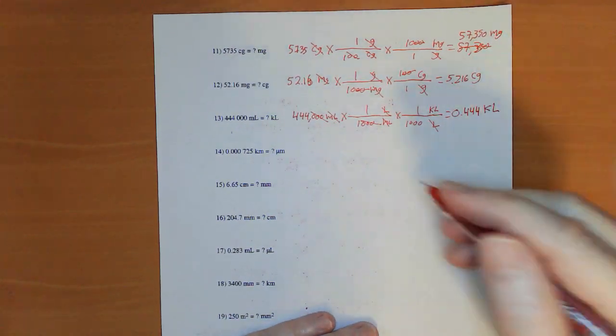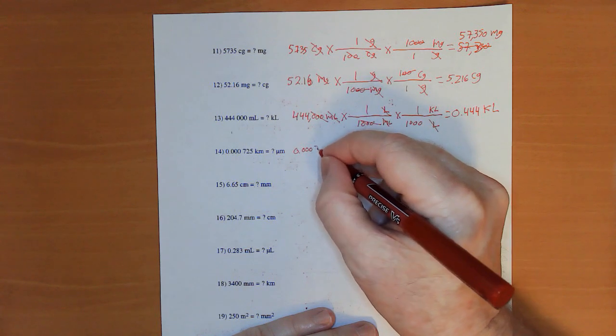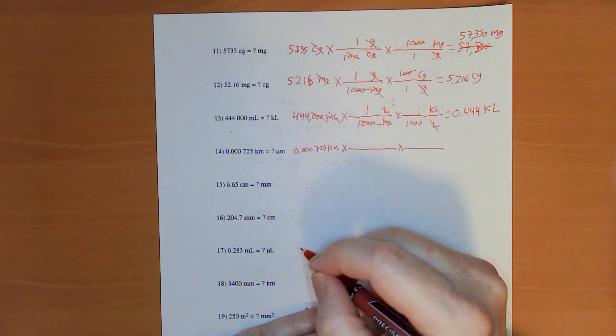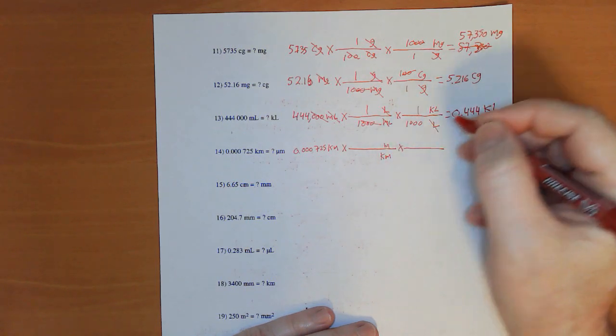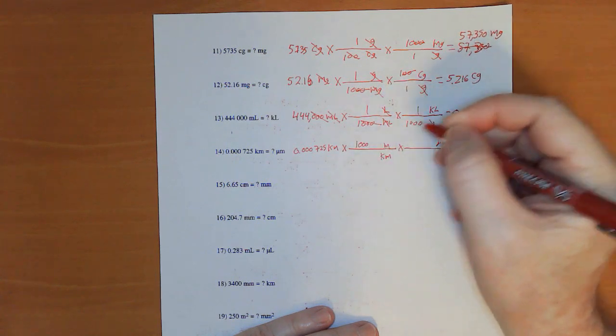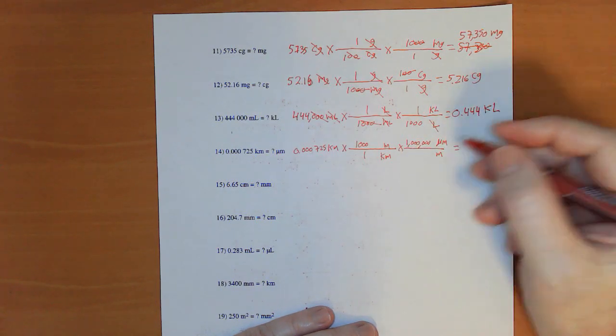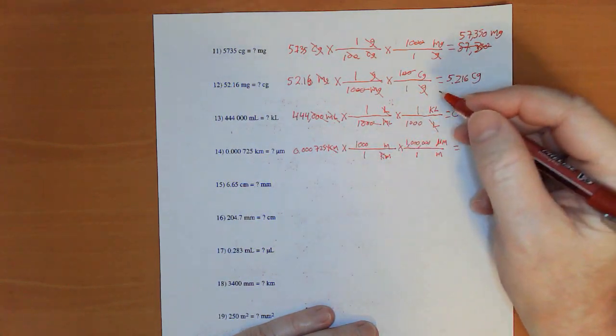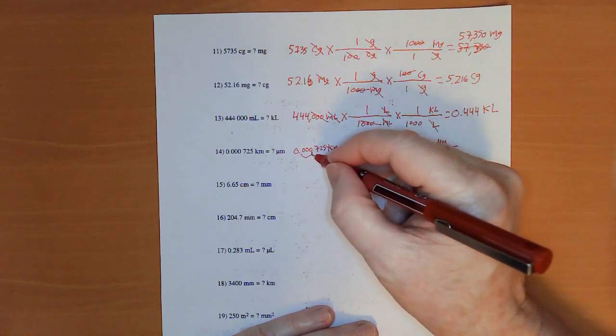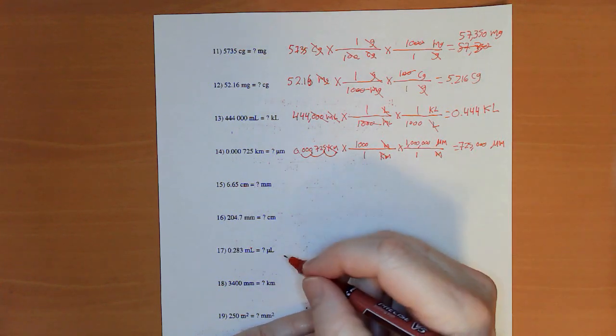Alright. So, now, moving on here. Micro again. I have kilometers. 0.000725 kilometers. Times. Times. Kilometers downstairs. Meters upstairs. Meters downstairs. Micrometers upstairs. I know there's 1,000 meters and a kilometer. And this time, I have the 1,000,000 upstairs to go with the micrometers. Kilometers cancels. Meters cancels. Multiply by that first 1,000. We go here. Then there. And then three more decimal spots. And 725,000 micrometers.